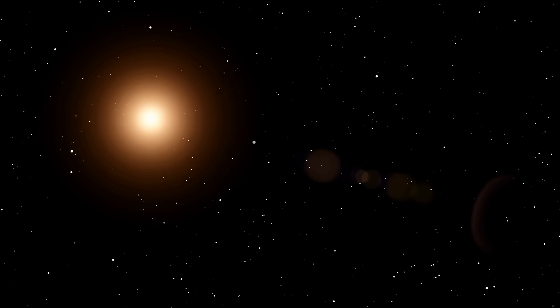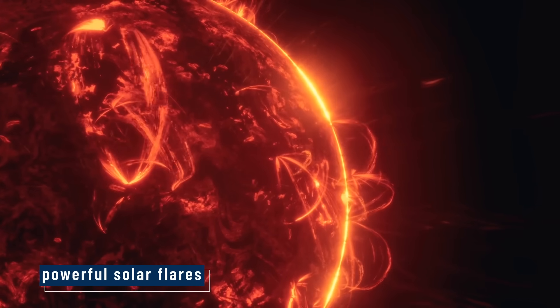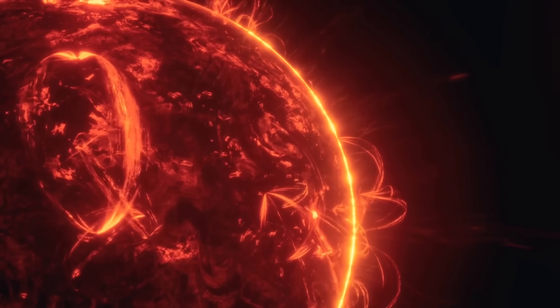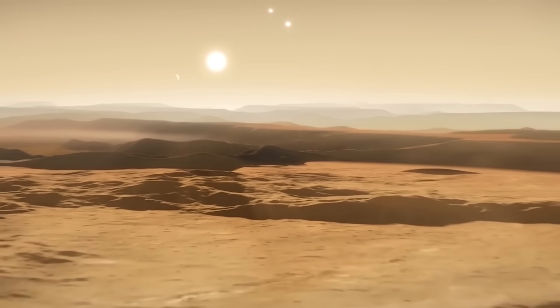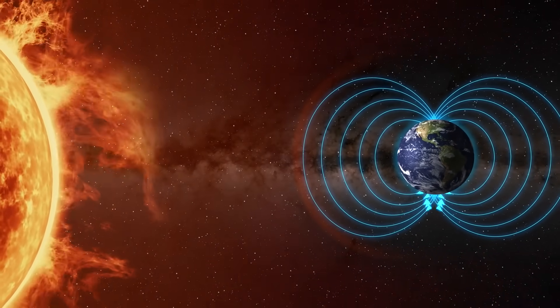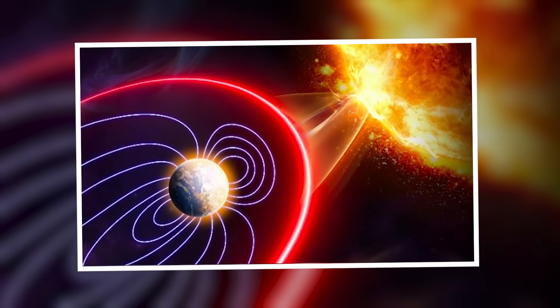Proxima Centauri is a red dwarf star, and red dwarfs are known for being active. They give off powerful solar flares - bursts of radiation that can blast a planet's atmosphere. Proxima b gets hit with radiation hundreds of times stronger than what Earth receives from the sun. If the planet doesn't have a strong magnetic field, or if it lacks a thick atmosphere, those flares could strip away its protection and make the surface unlivable.